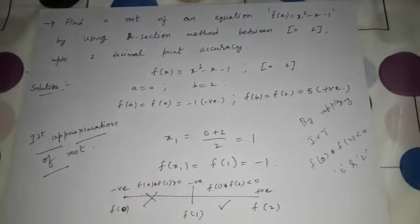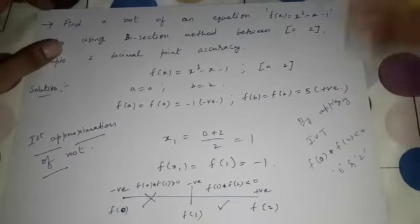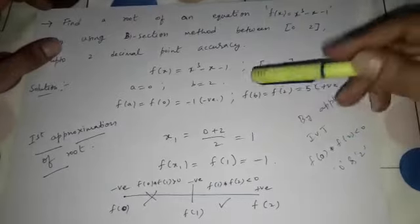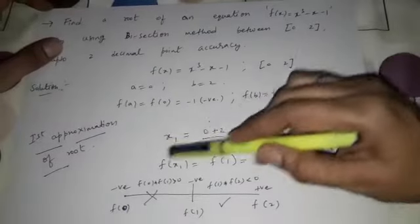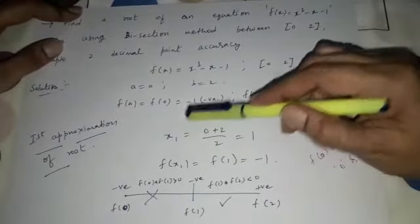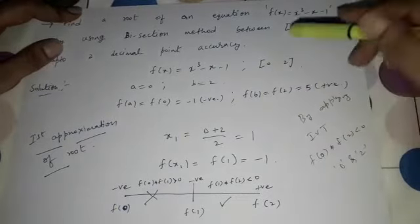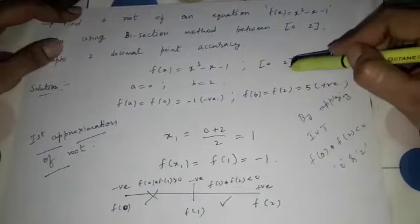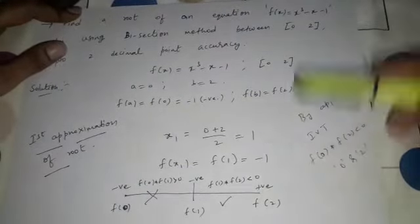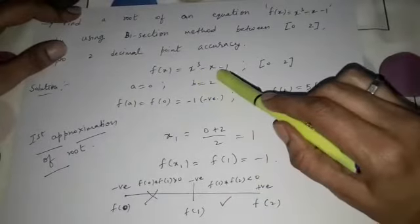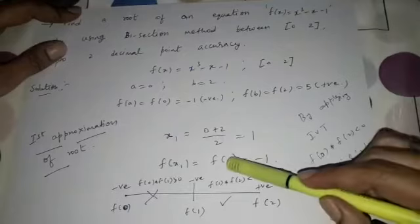Now applying the bisection method, we halve the interval at every step. The first approximation of the root is x1 = (0 + 2)/2 = 1. Now finding f(x1) = f(1): substituting x = 1 gives 1 - 1 - 1 = -1, so f(1) is negative.